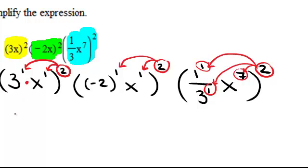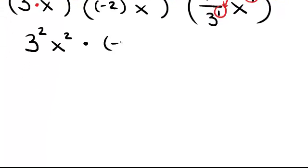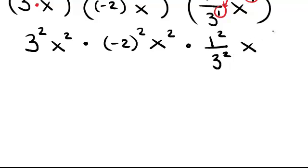So I'm going to have 3 to the second, x to the second, times negative 2 raised to the second, x to the second, times 1 to the second over 3 to the second times x to the 7 times 2 is going to give me 14.